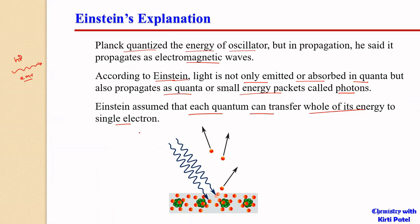A single electron can absorb only one quantum of energy at a time. It takes up the whole quantum; it cannot take a fraction of a quantum or give half to a neighboring electron.